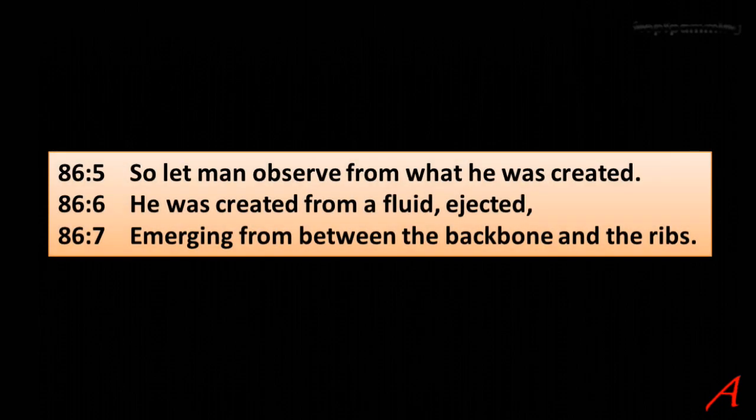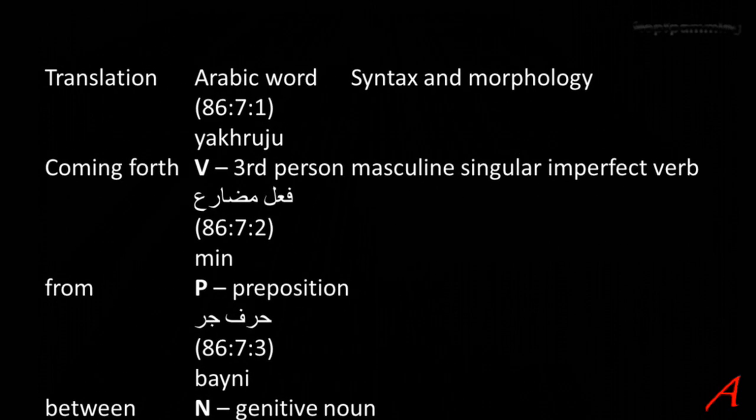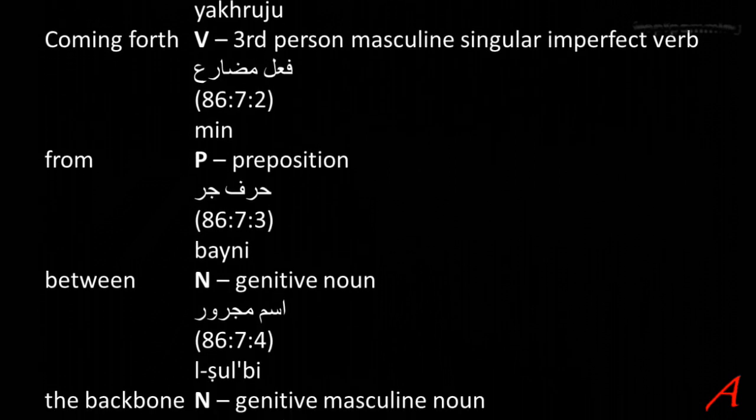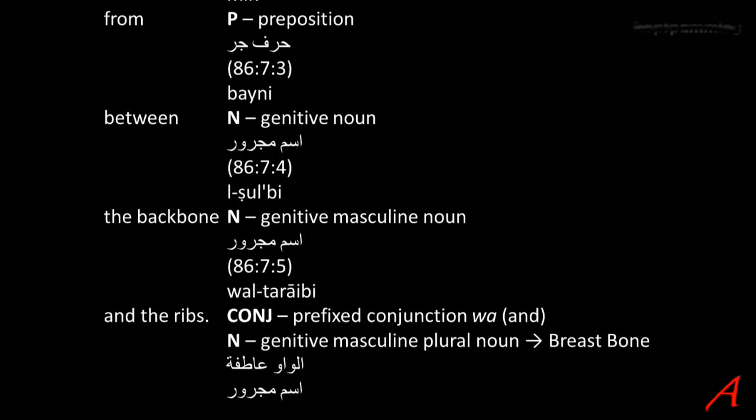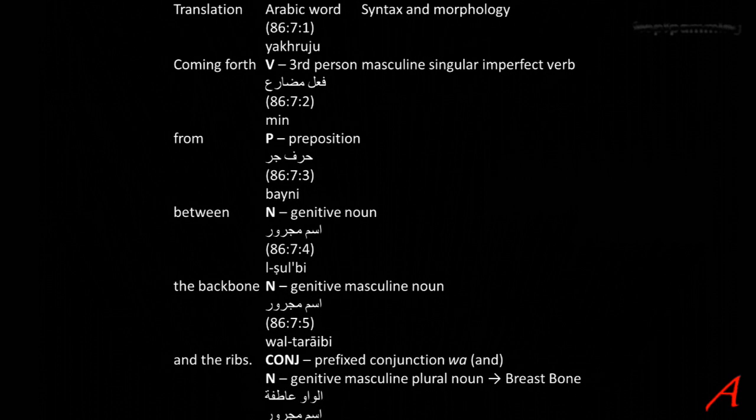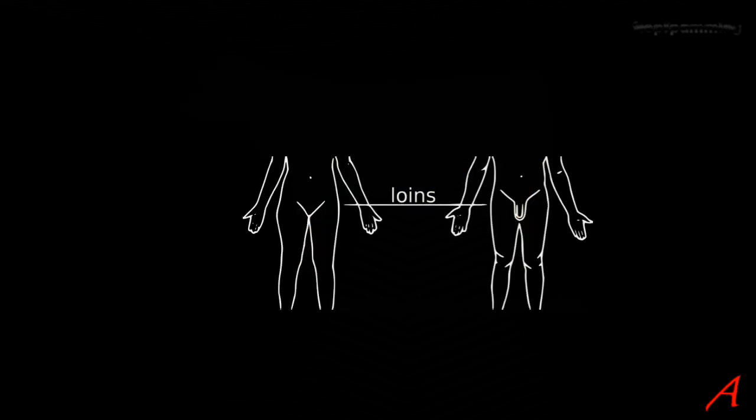Now what else is claimed in sentence number 7? Well that it's emerging from between this backbone and the ribs, and these are some of the translations all agreeing with this. You can see there's quite a few that Islam awakened have collected, and they all agree on this one idea. The liquid originates from somewhere between the spine and the rib cage. So looking at this sentence from the Quran word by word, we get that it is coming forth from between the backbone, again this word, and the ribs. And what is coming forth is this liquid, this fluid.